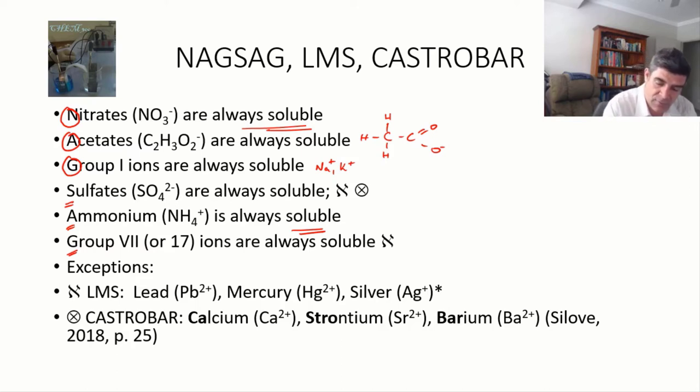So if we look at the sulfates, we can see that all of the sulfates are soluble, with two groups of exceptions. The first group of exceptions are our LMS, our lead ions, our mercury ions, and our silver ions. So that means that when we say sulfates are always soluble, except these, that would mean lead sulfate is insoluble. It would form a precipitate, and so would silver sulfate, and so would mercury.